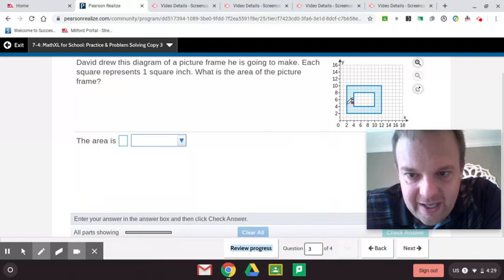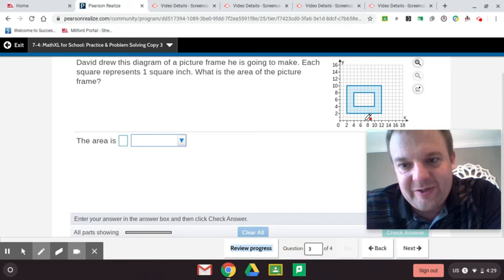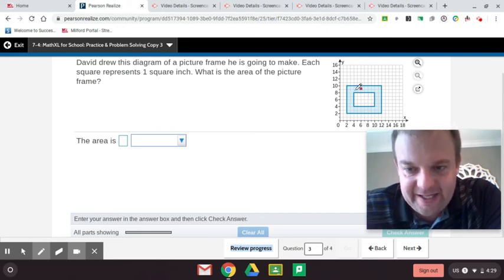And then we have 10 to two, that's eight. So eight times 10 is 80. Now the whole thing is 80. We got to subtract out this rectangle here.